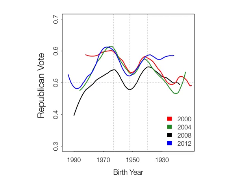You can't go from this graph to who won the election because there's no voter turnout and no age distribution of the population. At each specific birth year, for people of that birth year, what was the share of their vote given to the Republican presidential candidate in different years. Every four years there's this international event — an American president is elected — and each of the colors here is a different election year: 2000, 2004, 2008, and 2012 in blue.